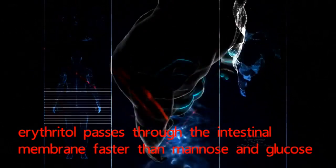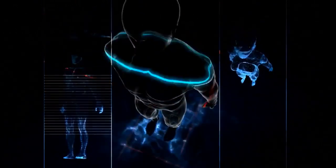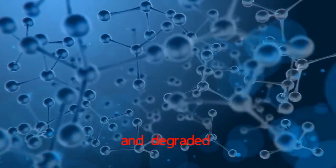Due to its small molecular weight, erythritol passes through the intestinal membrane faster than mannose and glucose. After it is absorbed in the body, it is not digested and degraded.